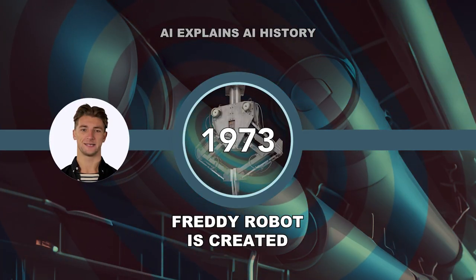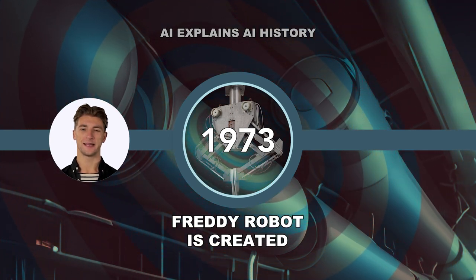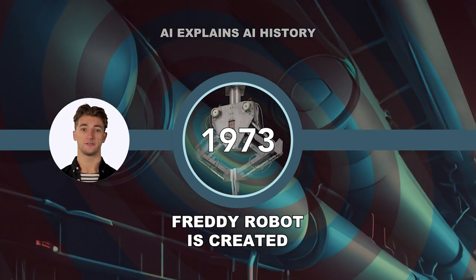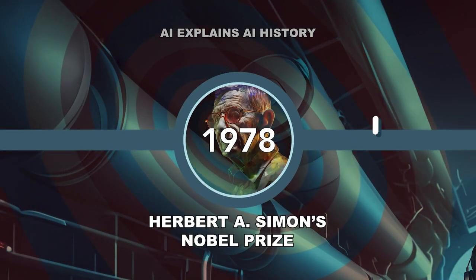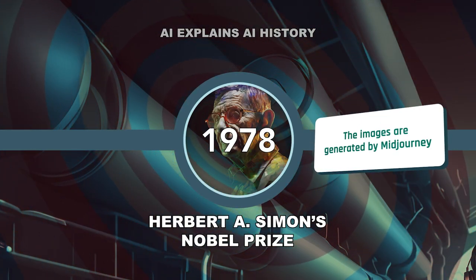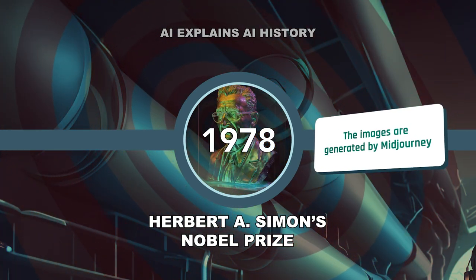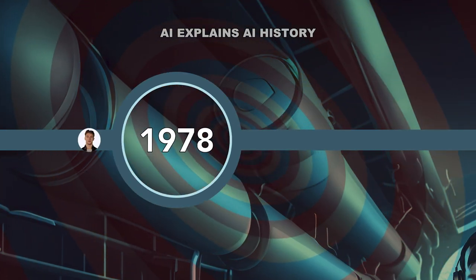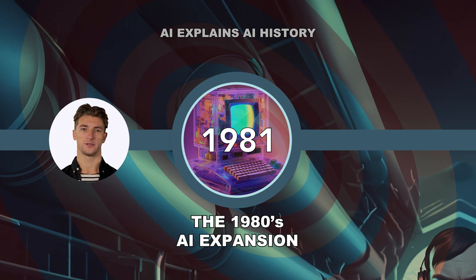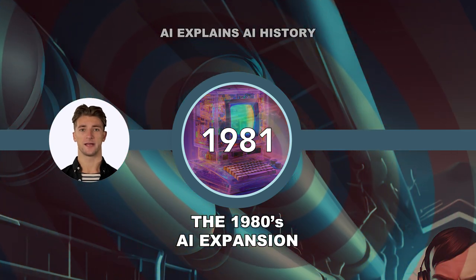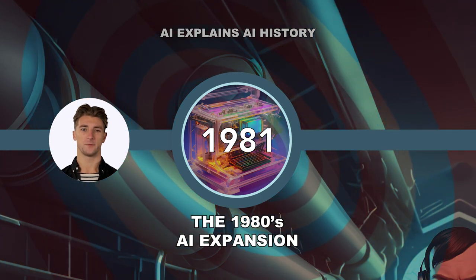Moving into the 1970s, the Assembly Robotics Group at the University of Edinburgh built Freddy the Robot in 1973 — the world's first thinking robot to combine a seeing eye and feel in hand. Five years later, in 1978, Herbert A. Simon won the Nobel Prize in Economics for his theory of bounded rationality, one of the cornerstones of AI. The 1980s saw the creation of new Lisp program machines, the emergence of expert systems, and the first robotic cars.